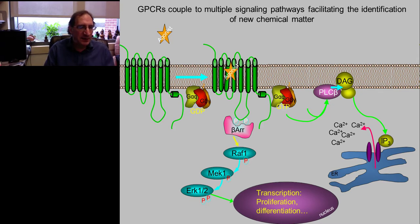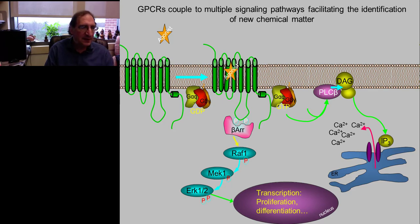G-protein-coupled receptors couple to multiple signaling pathways. They are seven transmembrane domain proteins, as you can see on the left-hand side. Following agonist binding, a conformational change occurs leading to the dissociation of their heterotrimeric G-protein and activation of various downstream effectors. In this case, this is a G-alpha-Q coupled receptor that activates PLC, leading to the release of inositol trisphosphate and ultimately the mobilization of intracellular calcium — what is generally called canonical G-protein-coupled receptor signaling.